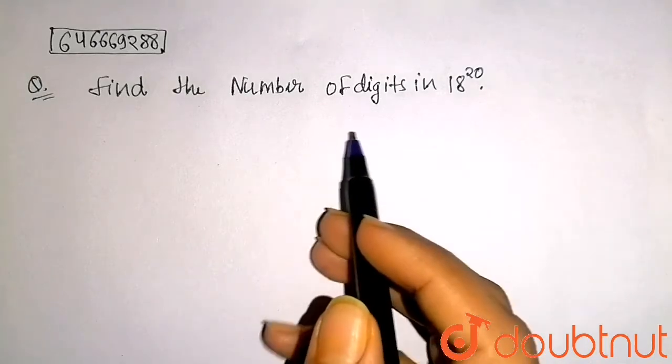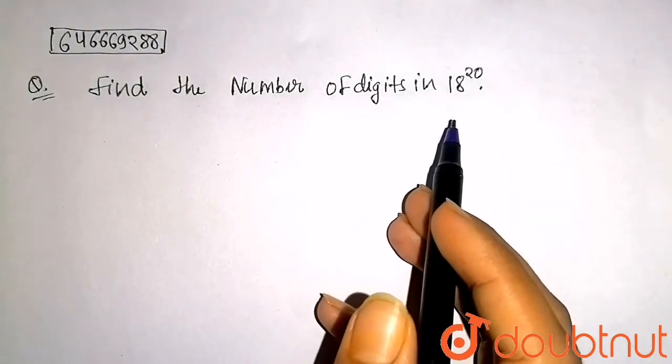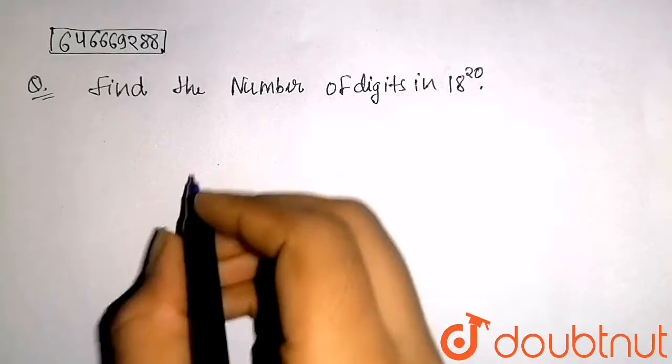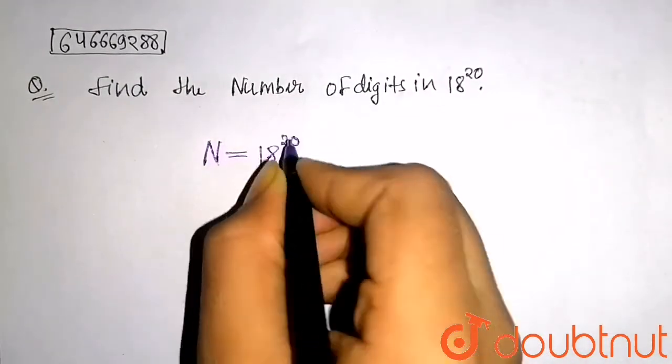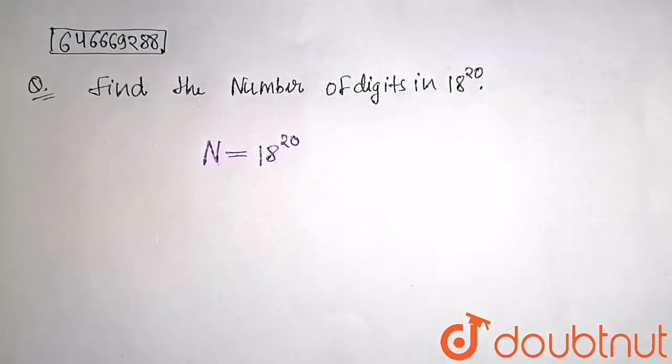It is given to find the number of digits in 18 to the power 20. So let's say that N equals 18 to the power 20. N is representing the number of digits which we have to find in 18^20.